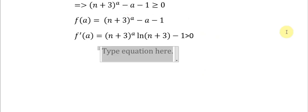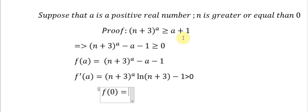We have f(0) here. So we put 0 in the function, and we get (n + 3)^0 - 0 - 1, which equals 0. So it means that the function is increasing from 0 plus to positive infinity.